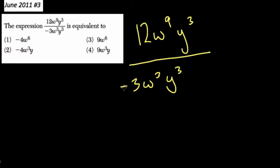One thing that might throw you off is this negative sign because you might lose track of it or over-apply it as you work through the problem. So I suggest when you write this out, 12w to the 9th y to the 3rd, when you write that denominator, treat negative 3 as its own term.